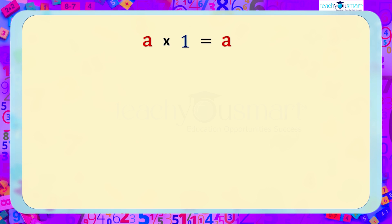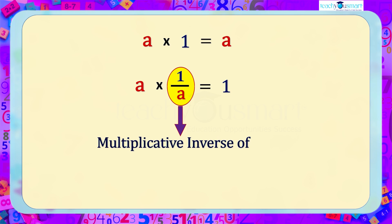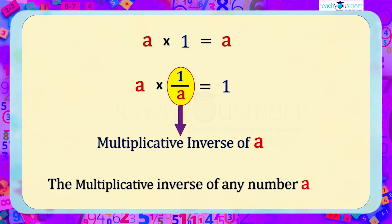We can also write it as a multiplied by 1/a equals 1. Here we get an element 1/a, which is the value that when multiplied by the original number a results in the multiplicative identity 1. We call 1/a as the multiplicative inverse of a. In general, the multiplicative inverse of any number a is 1/a.